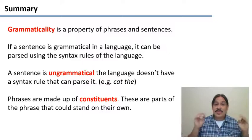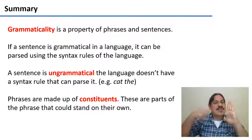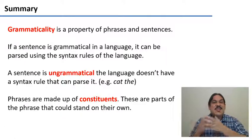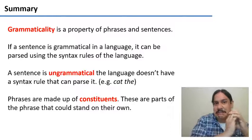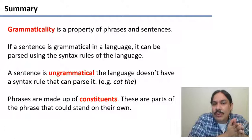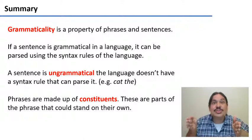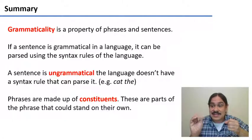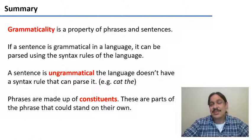In summary, grammaticality is a property of phrases and sentences. If a sentence is grammatical, there are a series of syntax rules in your brain that can be used to generate or parse that sentence. A sentence is ungrammatical if there is no series of syntax rules that can generate it. Notice how different this is from the prescriptive concept of grammaticality, where something is ungrammatical because it's ugly or aesthetically unappealing — like ending a sentence with a preposition or double negatives. In syntax, something is ungrammatical if it actually cannot be generated by the grammar of the language. Phrases are made up of constituents, which are phrases that could stand on their own. In the next video, we will look at more properties of x-bar trees.